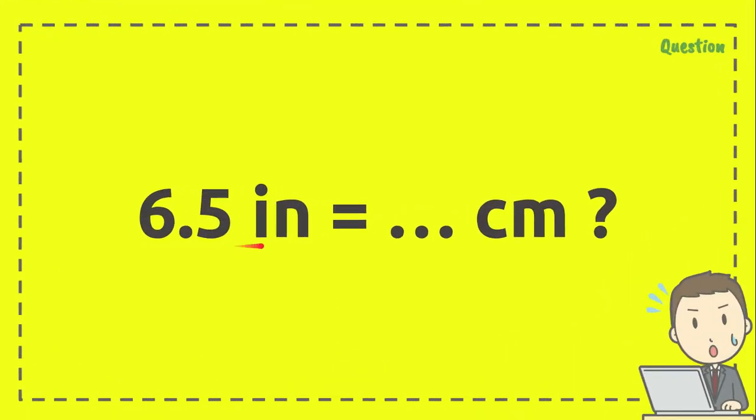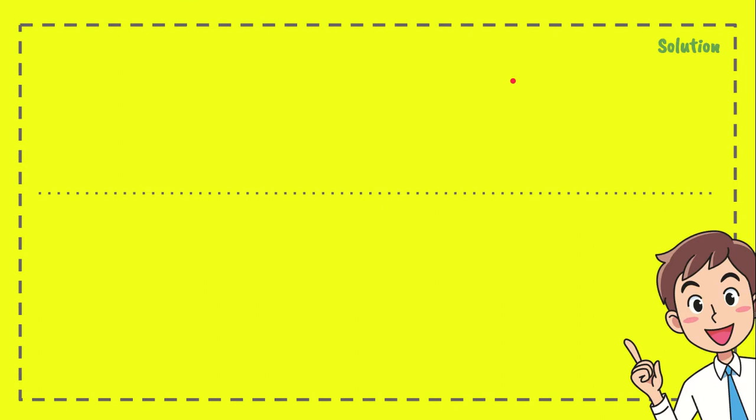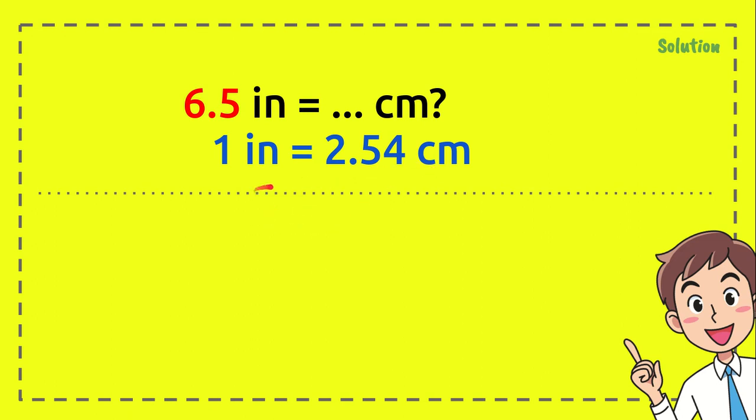Here is the question: 6.5 inches equals how many centimeters? Now here comes the solution. First, write the question again, just like what we have before. Then you write the formula under the question. After that, you need to write the formula again below. This is a very important step.